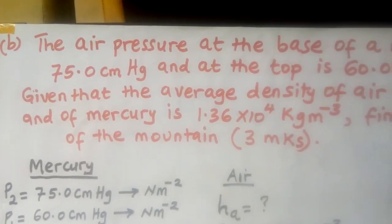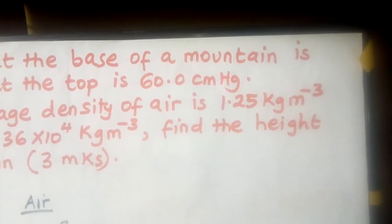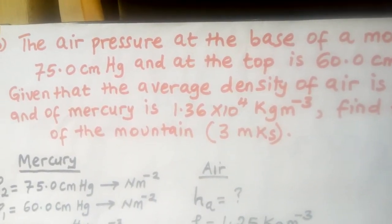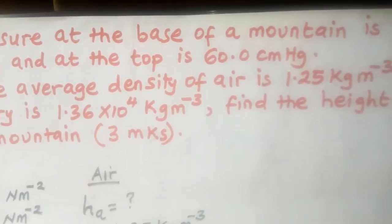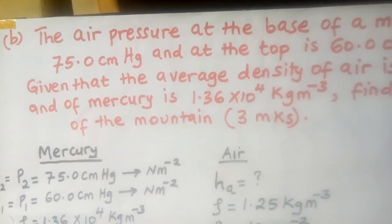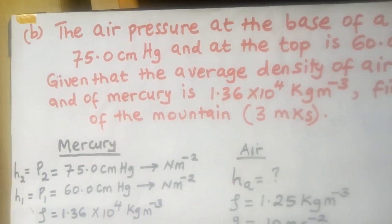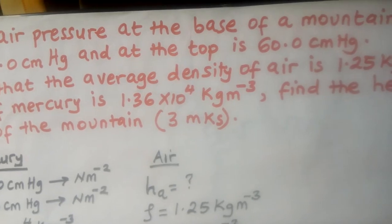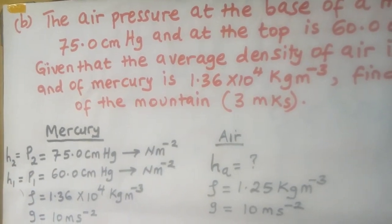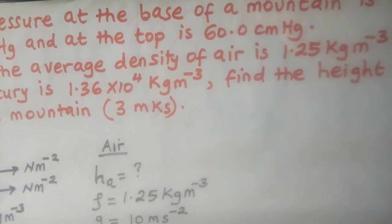Question B: The air pressure at the base of a mountain is 75.0 centimeters of mercury, and at the top is 60.0 centimeters of mercury. Given that the average density of air is 1.25 kg/m³ and the density of mercury is 1.36 × 10⁴ kg/m³, find the height of the mountain. (3 marks)